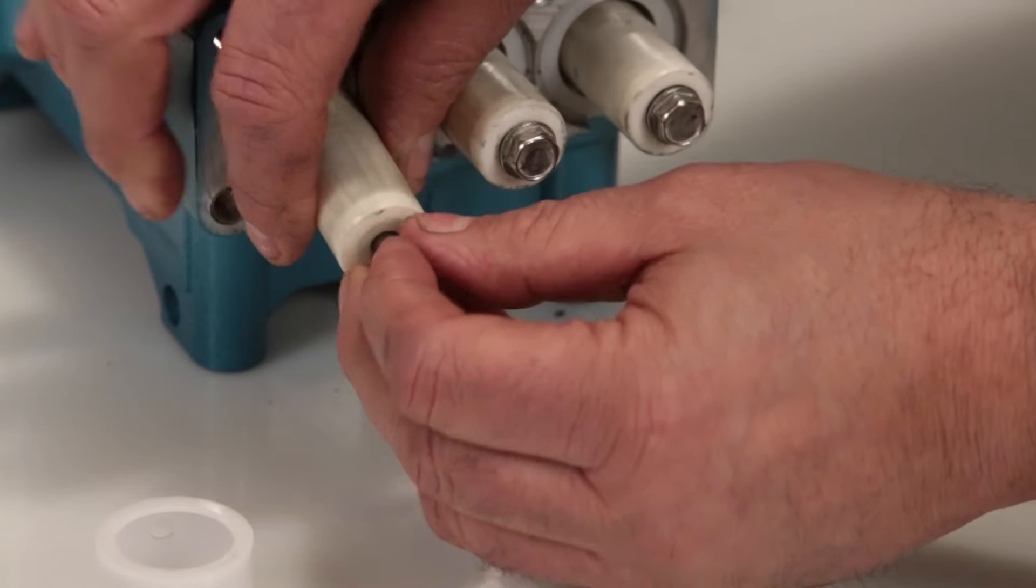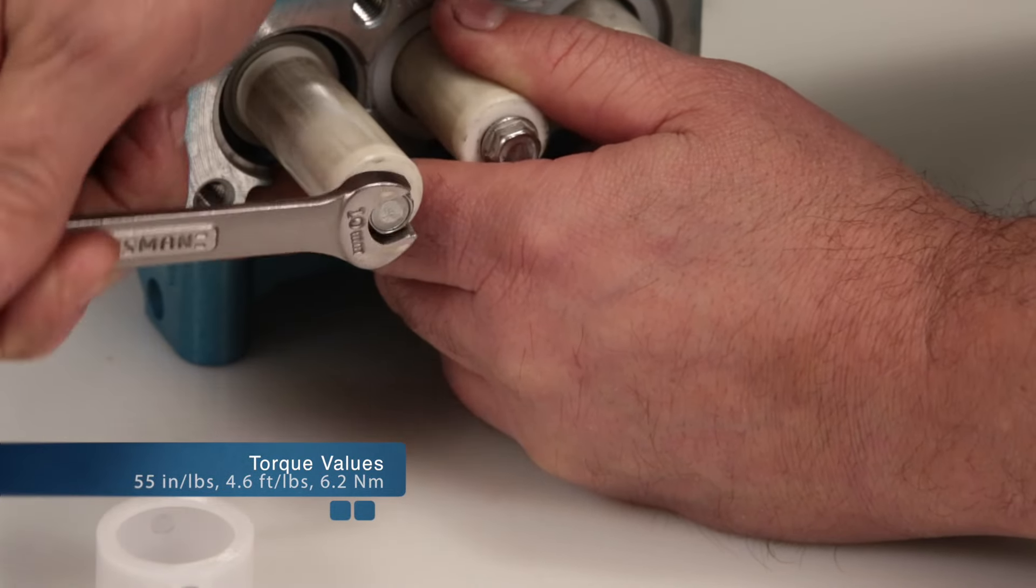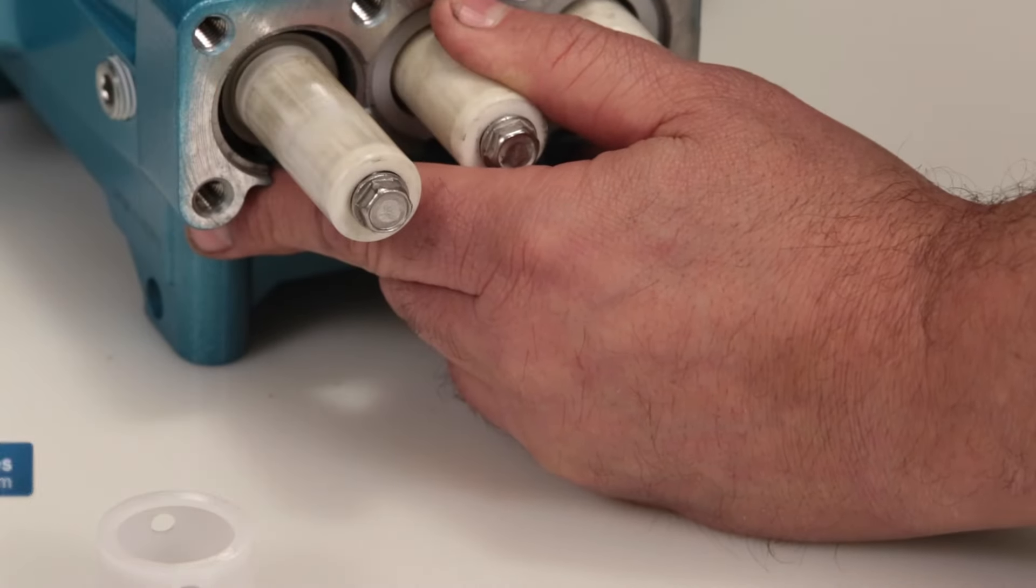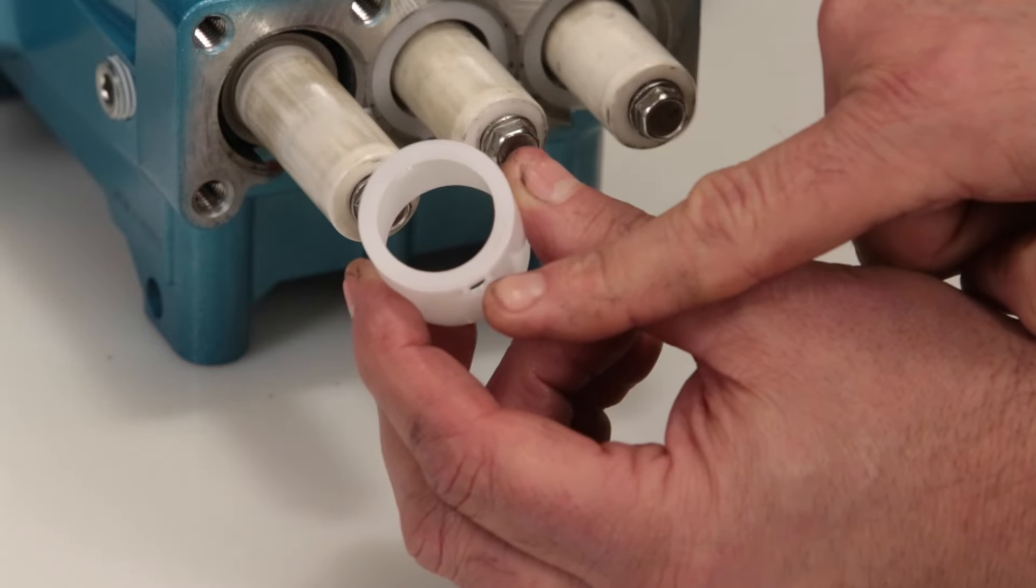Install plunger assembly and tighten using a 10mm wrench. Torque to specification. Install the seal retainer with the tabs facing down.